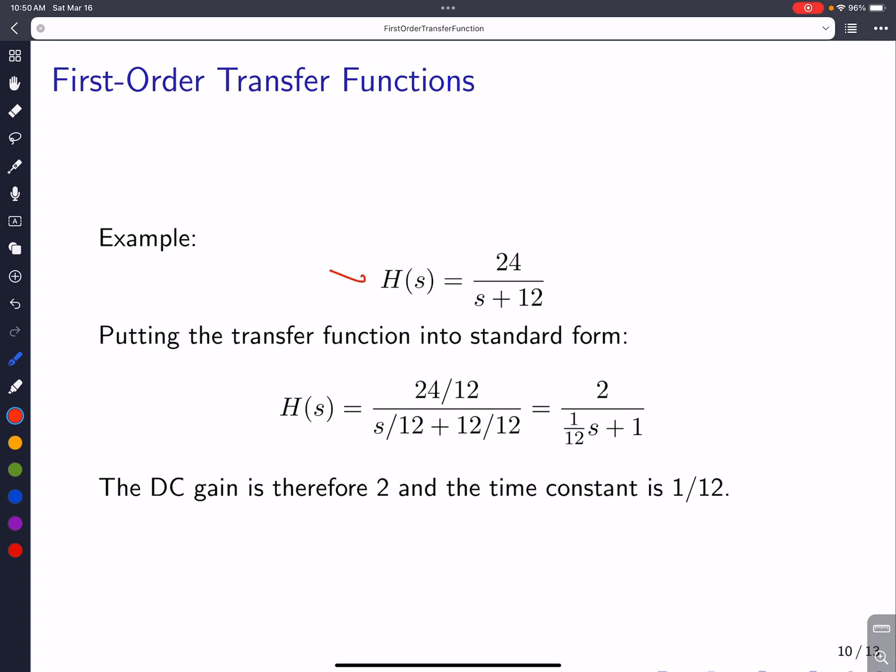Now if it's not in standard form, for example, this one. As I said, it's easy to put it into standard form. You just take the 12, the number in the denominator, and divide top and bottom by that number. So we end up with this piece on the top. And, of course, this disappears to 1. And then this reciprocal of 12 becomes the time constant. So we end up with 24 divided by 12 is 2. So that's k. And then the 1 over 12 becomes tau. So the DC gain is 2, and the time constant is 1 over 12. So it's very easy to go from this form into the standard form.